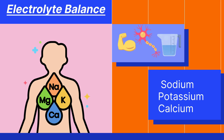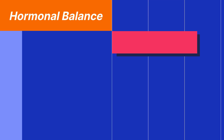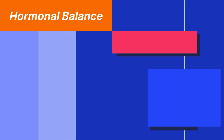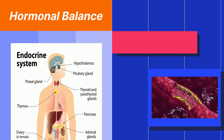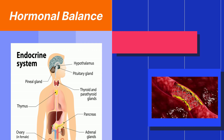Hormonal balance: hormones are chemical messengers that are produced by the endocrine system. They travel through the bloodstream and affect the function of other organs and tissues.